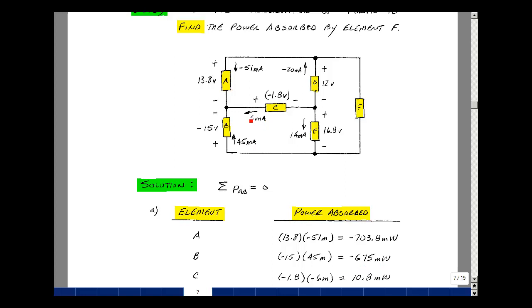For element C, I have the current leaving the plus terminal. Let me turn that around and have it enter the plus terminal, and so the value would be minus 6 milliamps. So the power absorbed is minus 6 milliamps times minus 1.8 volts, and that's a plus 10.8 milliwatts.